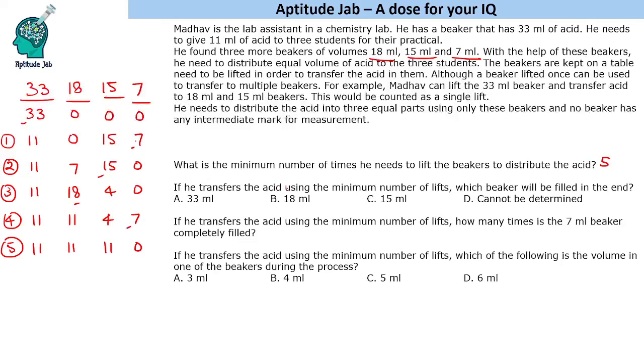If he transfers the acid using the minimum number of lifts, which beaker will be filled in the end? The 15 ml beaker will be filled in the end. If he transfers acid using the minimum number of lifts, how many times the 7 ml beaker will be completely filled? It is filled 2 times.